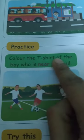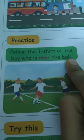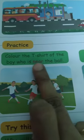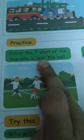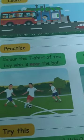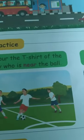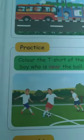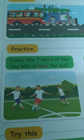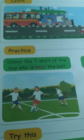Color the t-shirt of the boy who is near the ball. We want to give color to the t-shirt worn by that boy. What does 'near' mean? Near means the very shortest distance, or to reach a place very soon. This is the meaning of 'near'. We want to color the t-shirt of the boy who is near the ball.